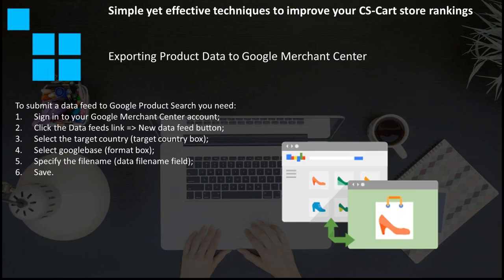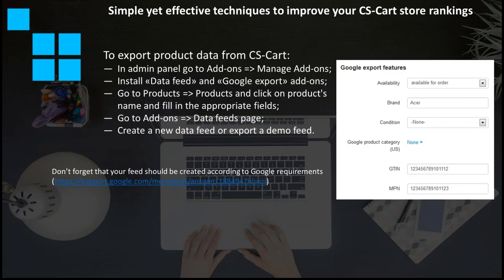Google Merchant Center is a tool that helps you upload your store and product data to Google and make it available for Google Shopping and other Google services. This issue is important for advanced online stores and the process may sometimes be cumbersome. On these slides you will find detailed instructions — you can show them to your programmer or personal SEO analyst. That's the second part: export your data from CS-Cart, then upload it back to Google. Don't forget that your feed should be created according to Google requirements — here is the link on the slide.